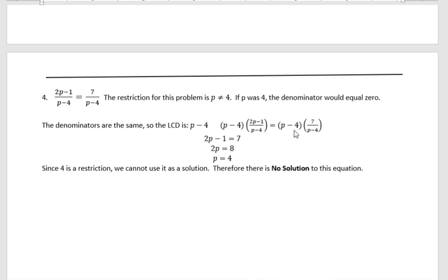The denominator is p minus 4 because they are the same. So I multiply both sides by p minus 4. That cancels off that side leaving 2p minus 1, and it cancels off over here leaving 7. Now if I add 1 to both sides I get 2p equals 8. Divide both sides by 2, I get p equals 4. Now that was the restriction. We said p could not be 4. Since it's a restriction, we can't use it as our solution, and therefore we would say that this equation has no solution.